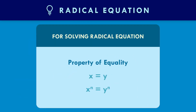How do we solve a radical equation? For solving a radical equation, we must use the property of equality. The property of equality states: if x equals y, then x to the n equals y to the n.